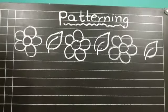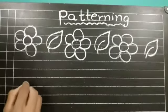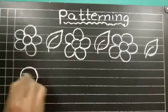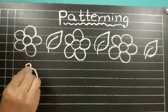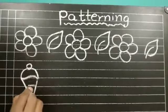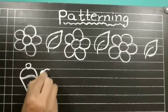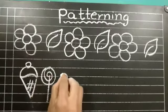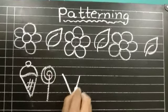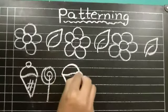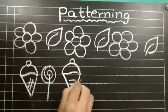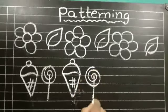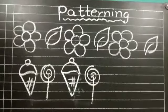Now, we will see one more example. What is this children? Yes, ice cream. And this is lollipop. Then again, ice cream. Lollipop. See, this is our basic pattern.